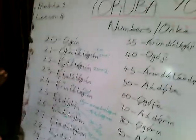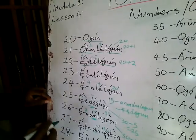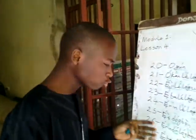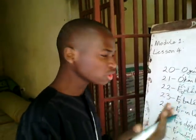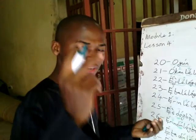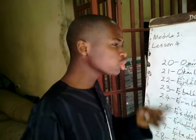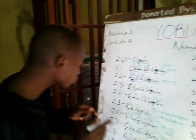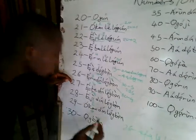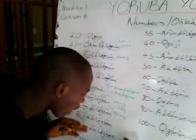One might ask why we don't continue 26 as Eji Lelogun. We can say that, but in the standardized European structure, any number higher than 5 is not used to form another number. We make sure the numbers used to gauge the numbers being formed are always between 1 and 5. So we never use 6, 7, 8, or 9 — we always use the lesser numbers. That is why in 26 we go back to 4, in 27 to 3, in 28 to 2, and in 29 to 1. The numbers used to form higher numbers are always between 1 and 5.